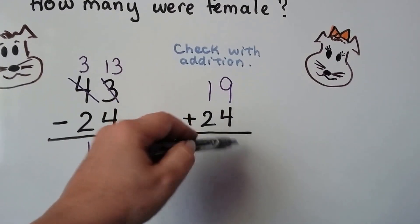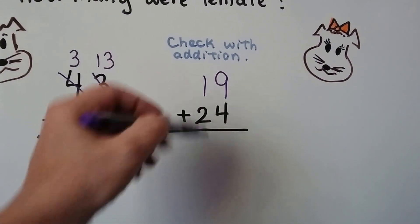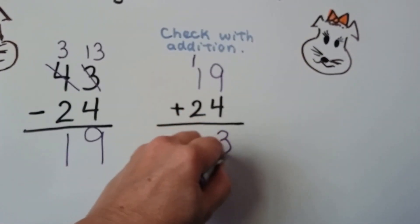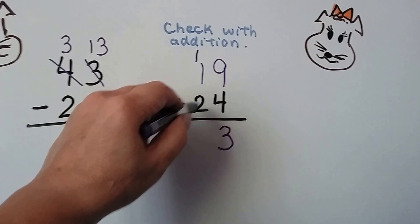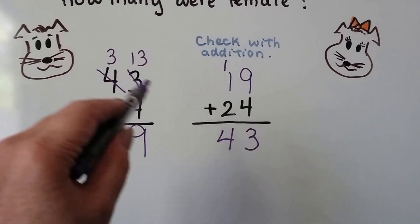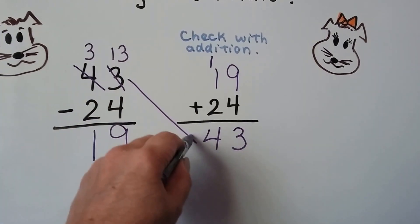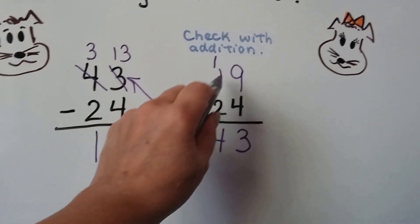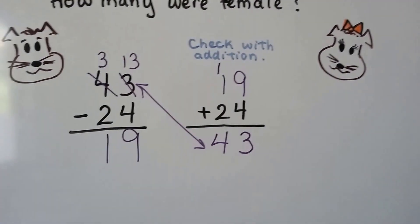9 plus 4 is 13. We regroup the 1 and put the 3 down, and 1 plus 1 plus 2 is 4. We got the right answer — we got 43, the same thing as the minuend. We just moved the difference up here and added it to the subtrahend.